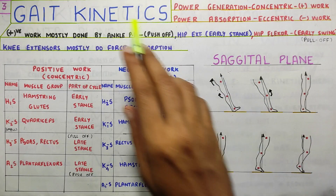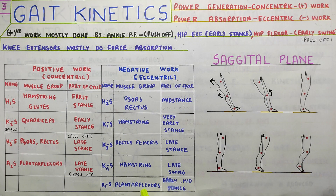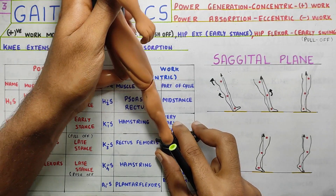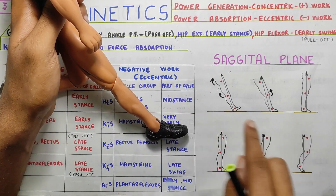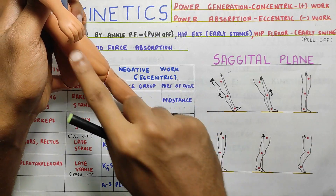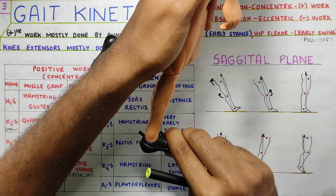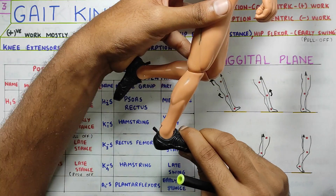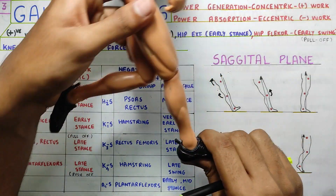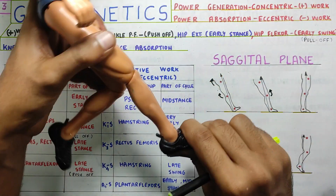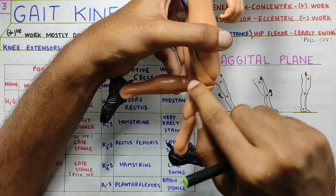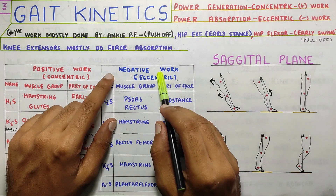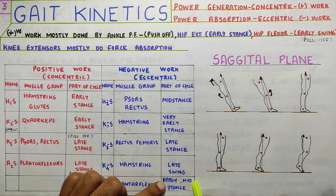Moving ahead, A1S involves the plantar flexors working in early and mid stance. When you put your foot on the ground and move ahead, your foot goes from a plantar-flexed position to a dorsiflexed position. During this, your plantar flexors will be working eccentrically — lengthening from a shortened position and controlling the movement ahead. So A1S is the negative work of plantar flexors during early and mid stance.